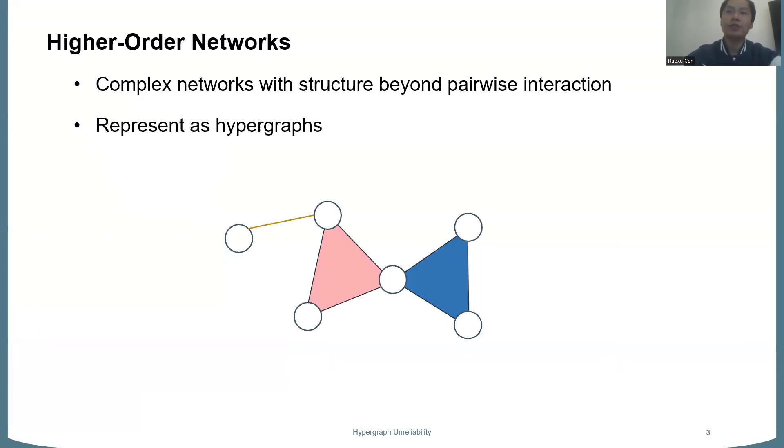Now, usually a network can be modeled by a graph, right? So why do we care about hypergraphs? Because there is a rising concept called higher-order networks, which means for some complex networks, maybe it's important to also model some structure beyond pairwise interaction, or maybe some interaction involving three parties in the network like this. So it's necessary to represent such a higher-order network as hypergraph.